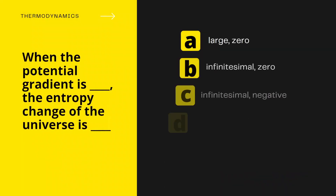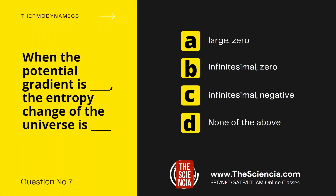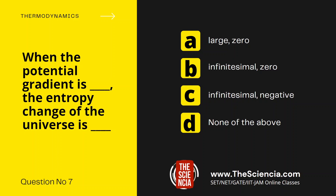Now let us move to another question, that is question number 7. When the potential gradient is blank, the entropy change of the universe is blank. Option A, large, zero. Option B, infinitesimal, zero. Option C, infinitesimal, negative. And Option D, none of the above.